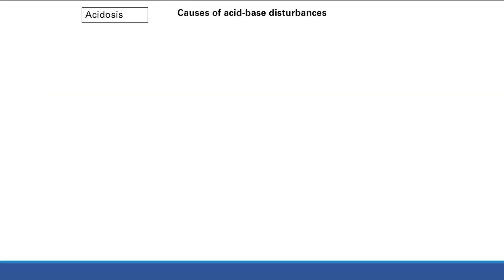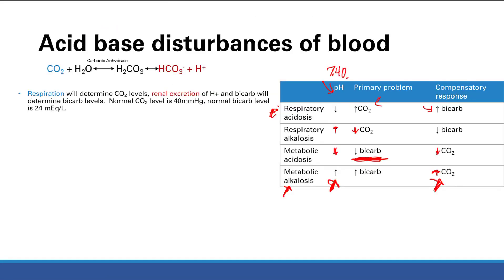Then the pH still tells you what it is. Increased pH means alkalosis — opposite directions of pH and CO2, so it's respiratory alkalosis. Same idea for respiratory acidosis. The reason this trick works is that CO2 reflects a rapid, immediate response. It wouldn't work looking at bicarb because the bicarb might not have shifted yet. But for metabolic problems, the respiratory response is immediate — so CO2 will always be in the same direction as pH for metabolic, and the opposite direction for respiratory.